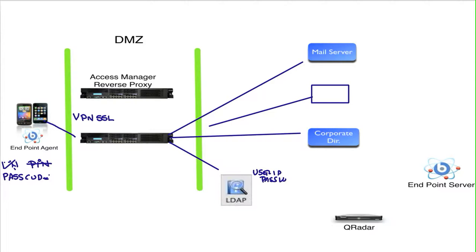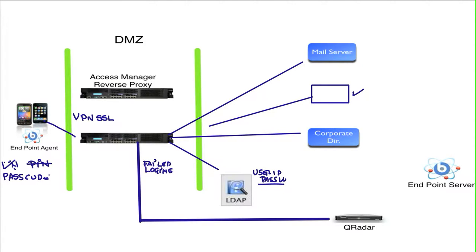But what happens if the device falls into the wrong hands? Let's assume somebody gets to know the passcode, unlocks the device, tries to go to the application, doesn't know the user ID and password, and tries several times. Our appliance is going to log a couple of failed logins, and those failed logins can actually be intercepted and read by our QRadar SIEM.